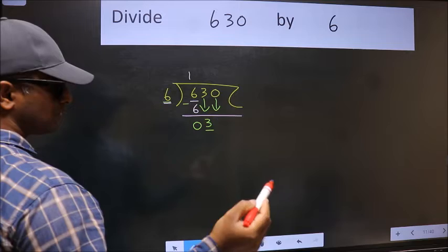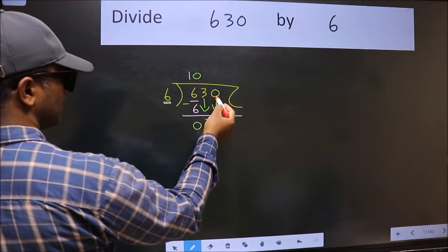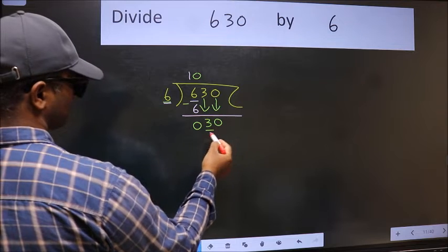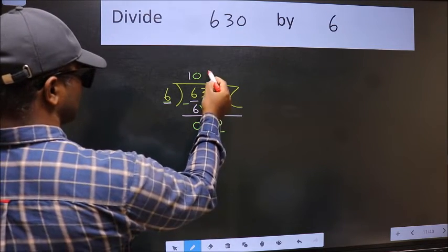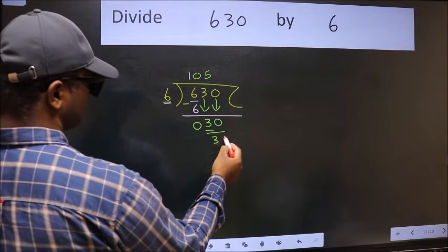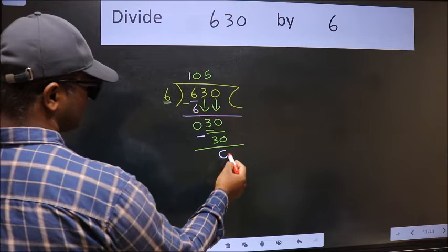And the rule to bring down the second number is we should put 0 here. Then only we can bring this number down. Now 30. When do we get 30 in the 6 table? 6 times 5 is 30. Now we should subtract. We get 0.